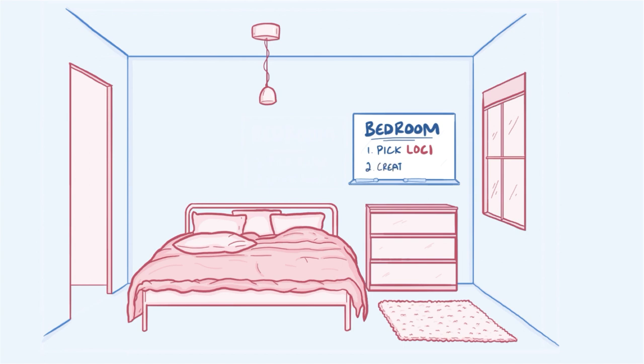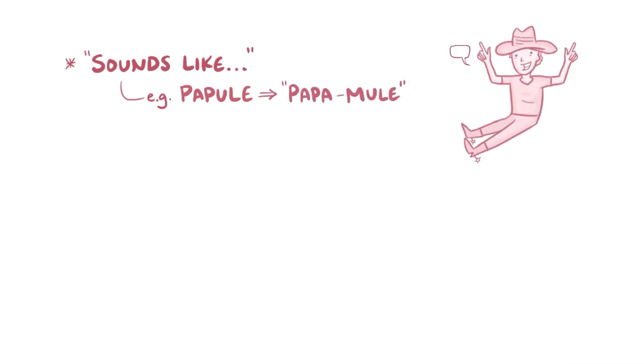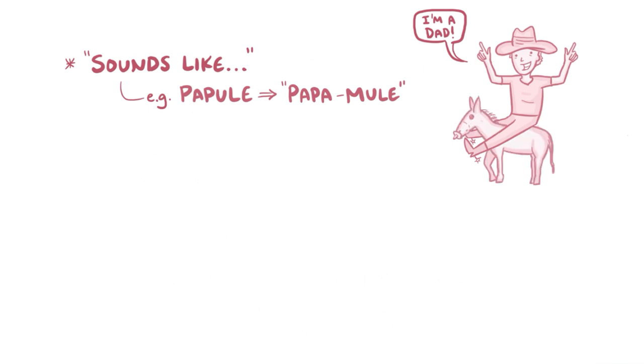Next you have to create images for each term you're trying to remember. To do this you can try a few approaches. First, you might go with sounds. For example, papule sounds a little like papa and mule, so you might imagine an excited new dad riding around on his baby mule.